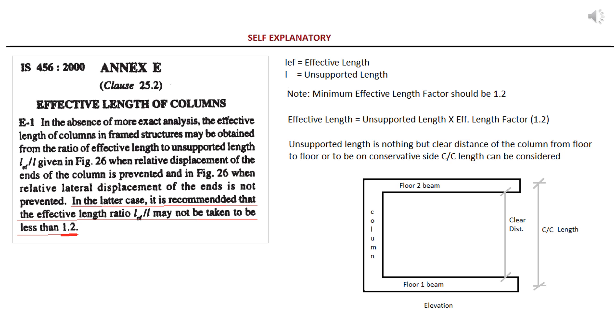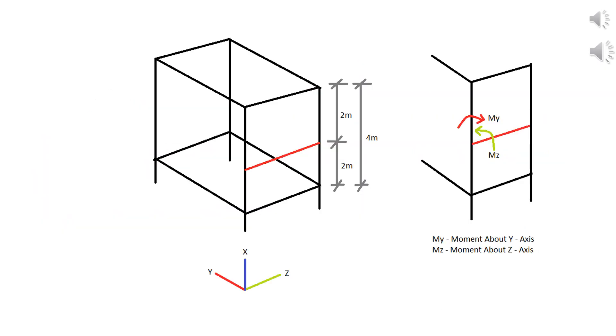You can learn in IS 456-2000 where effective length factor should be used. Mostly you will be doing analysis and design of structures in software like ETABS, STAAD Pro, SAP2000, etc. In that you can define these effective length factor parameters so that software will consider this factor while designing the structural element, mainly in the design of slender columns.